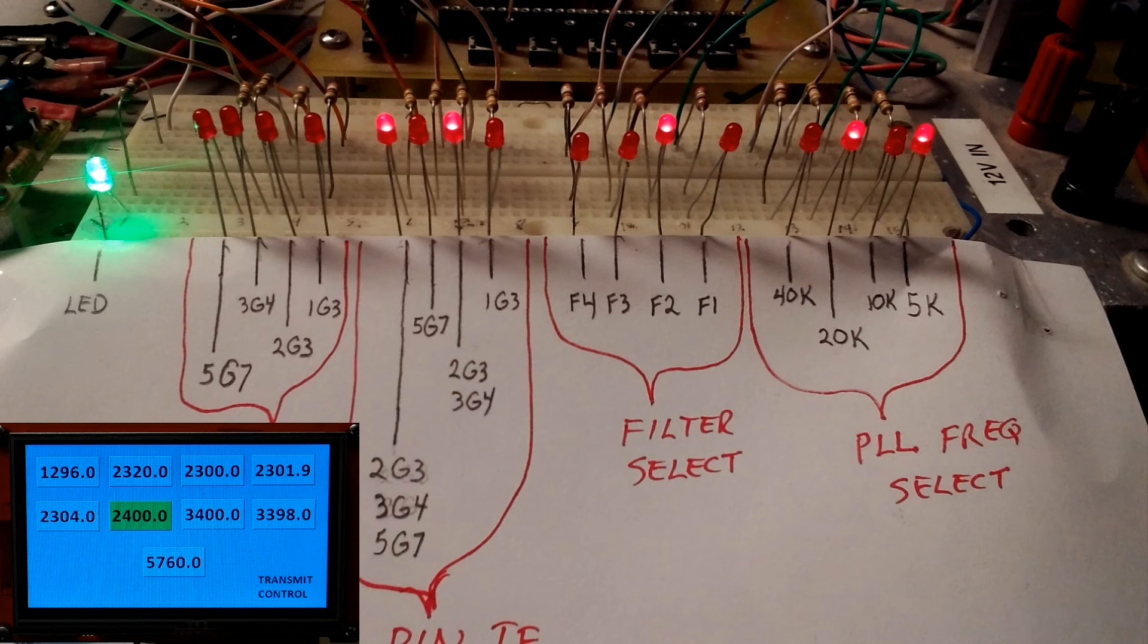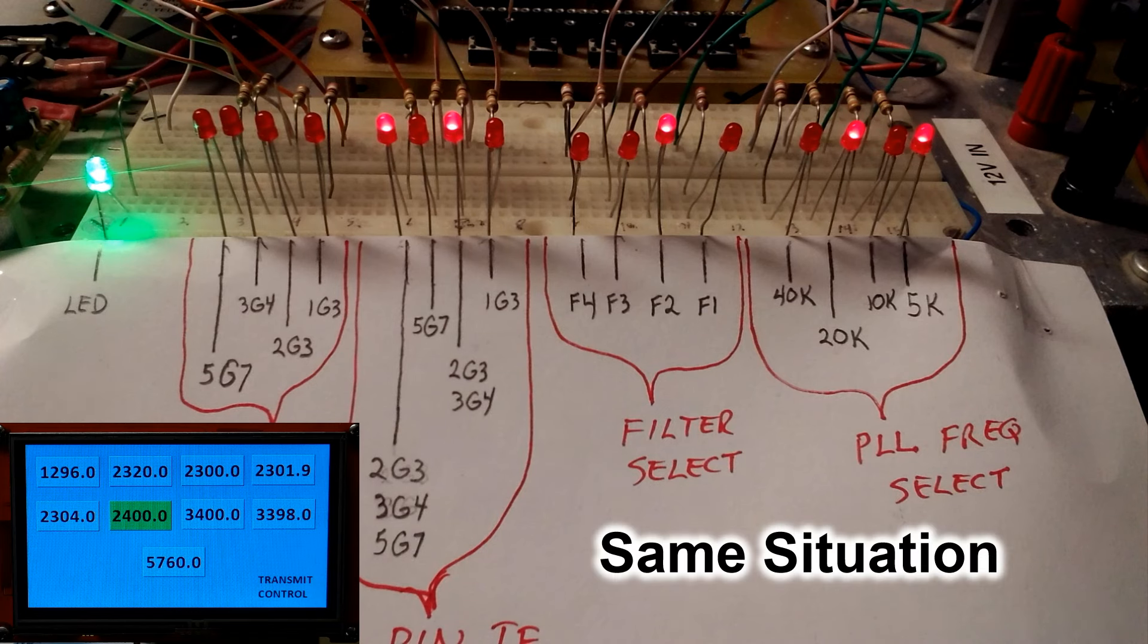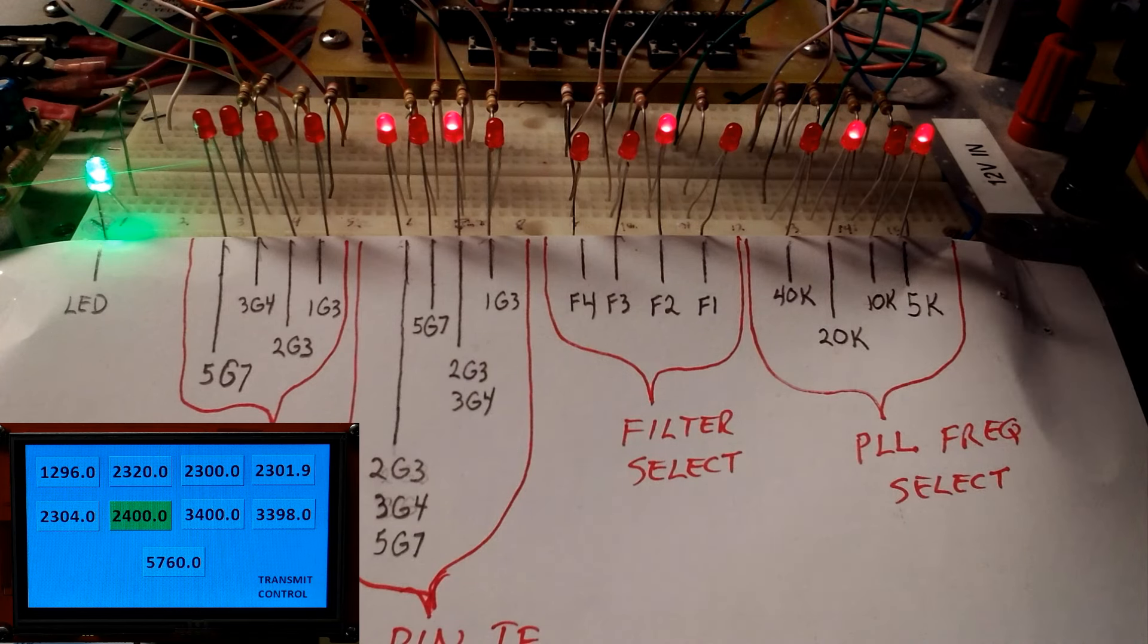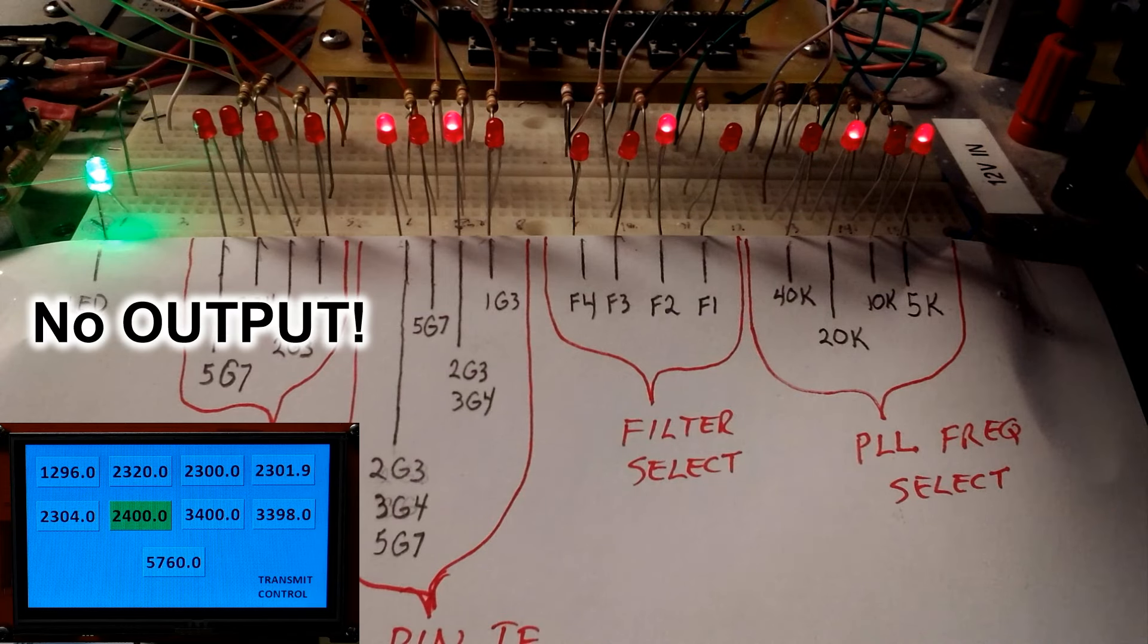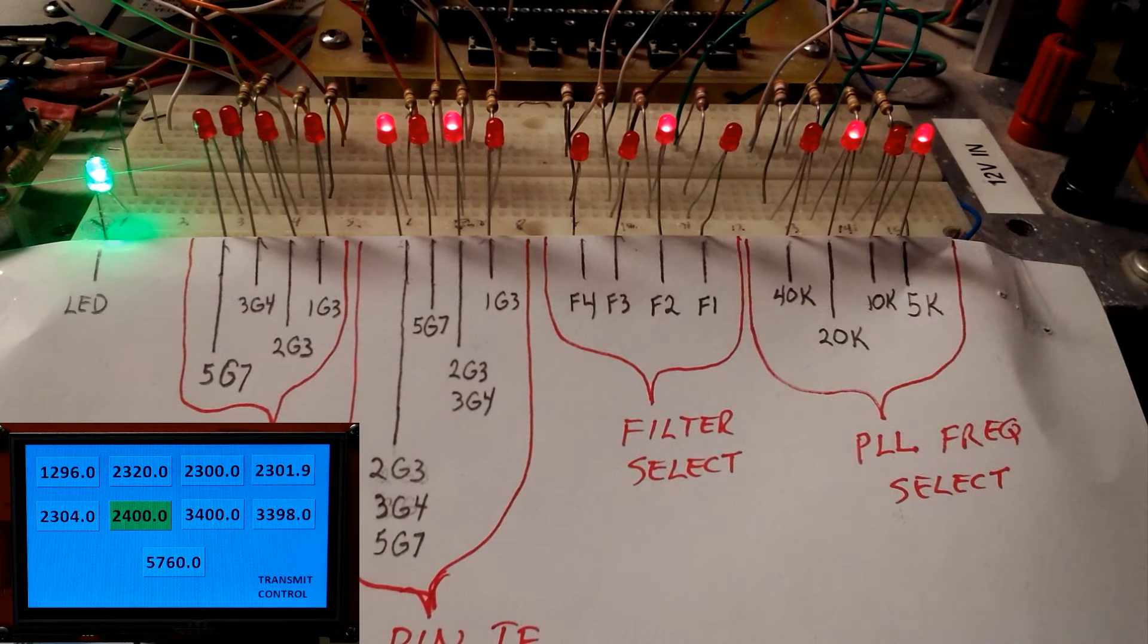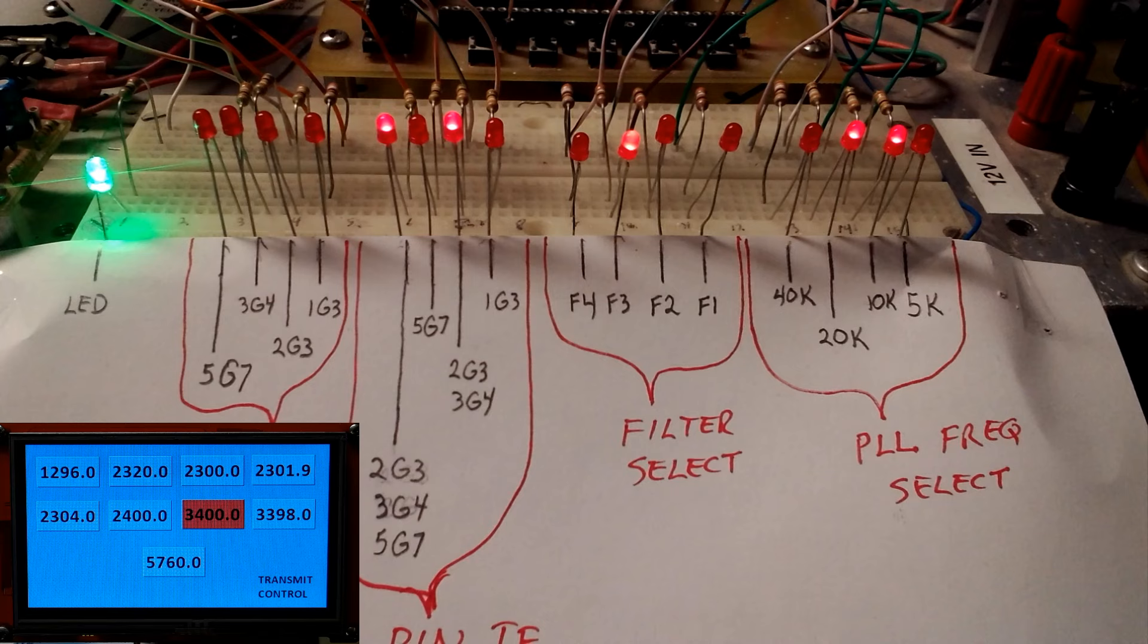Again, next band which is the same situation is selected. Again, take note of the outputs. Next band, the 9 centimeter band which is allowed to transmit, and you'll see it accordingly.